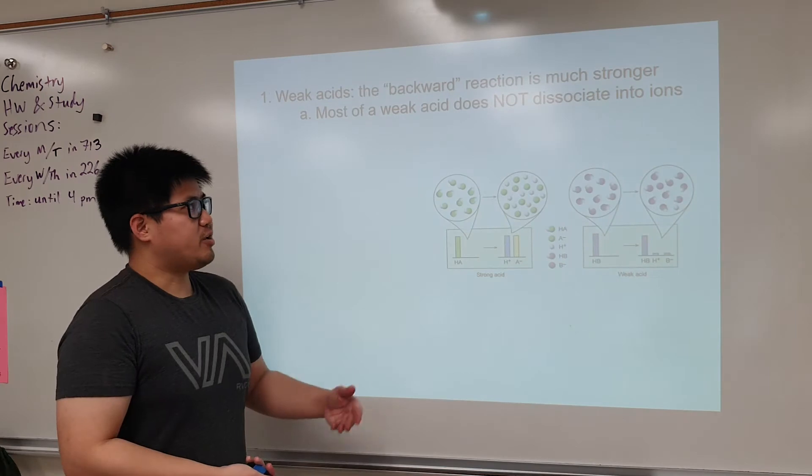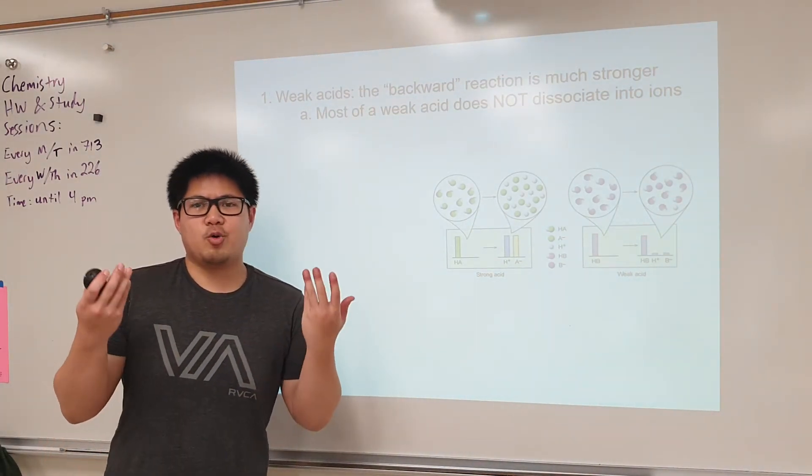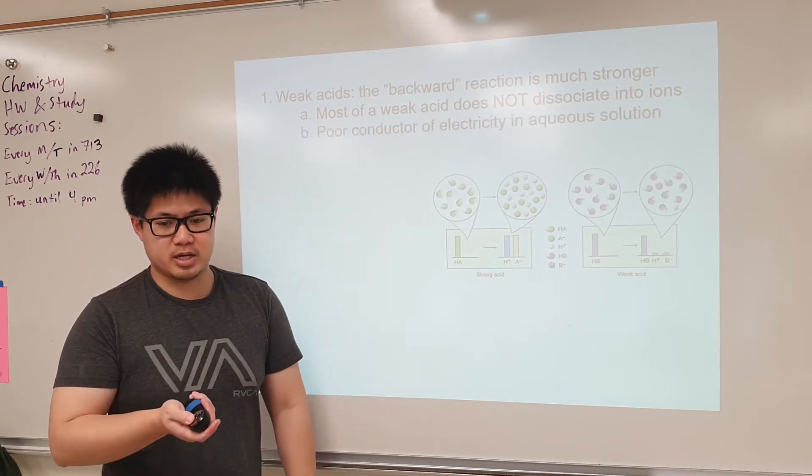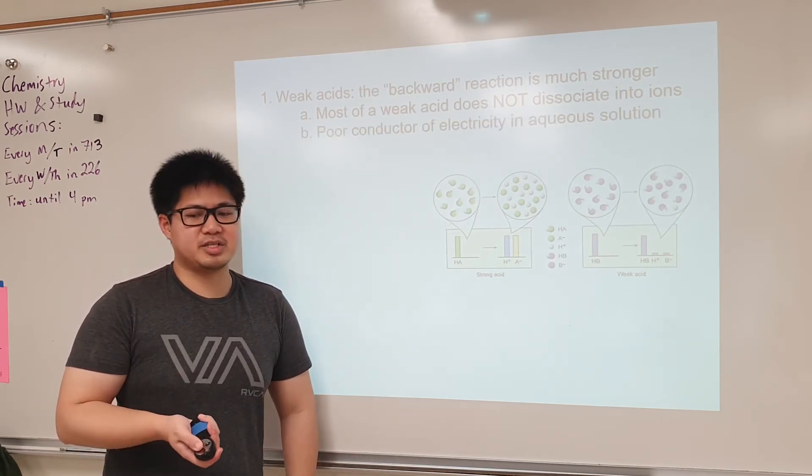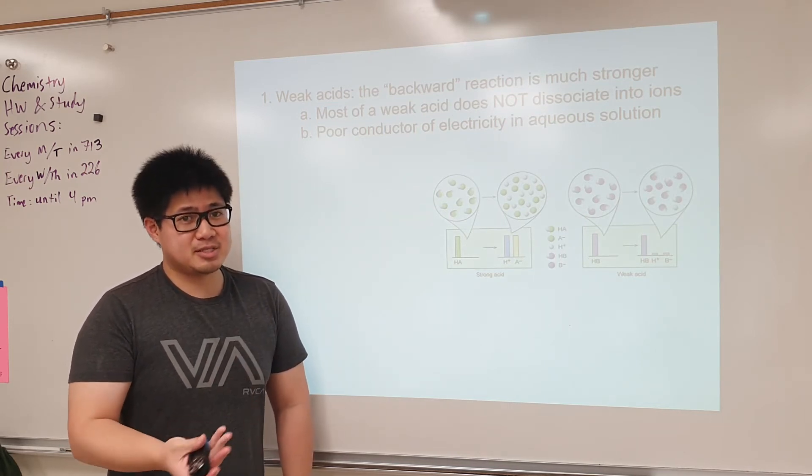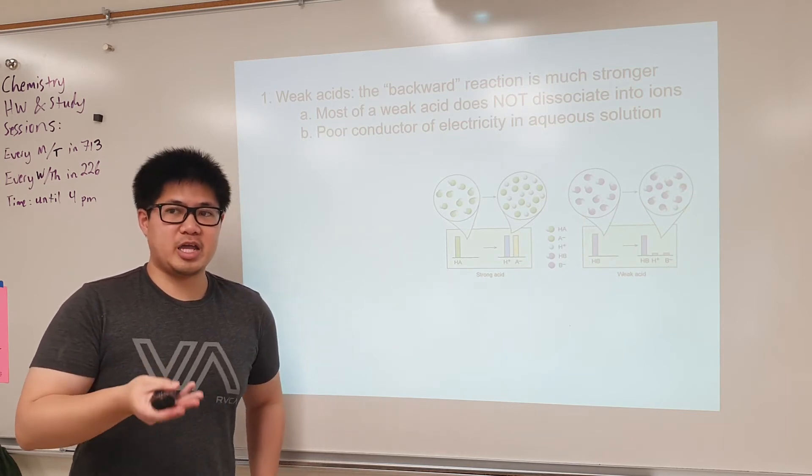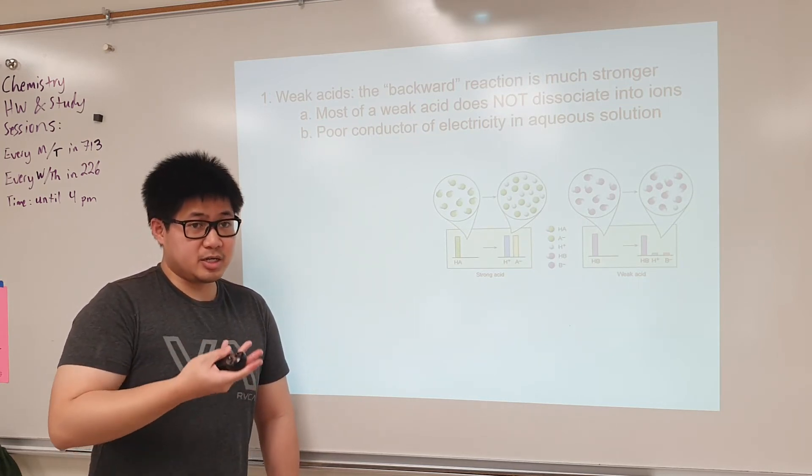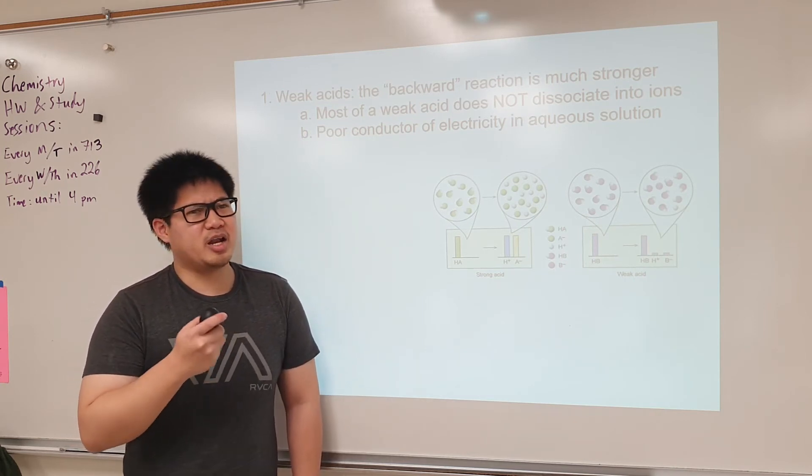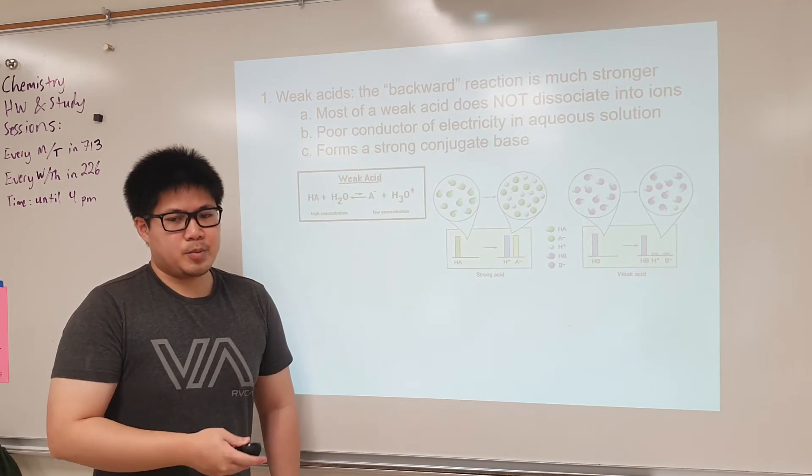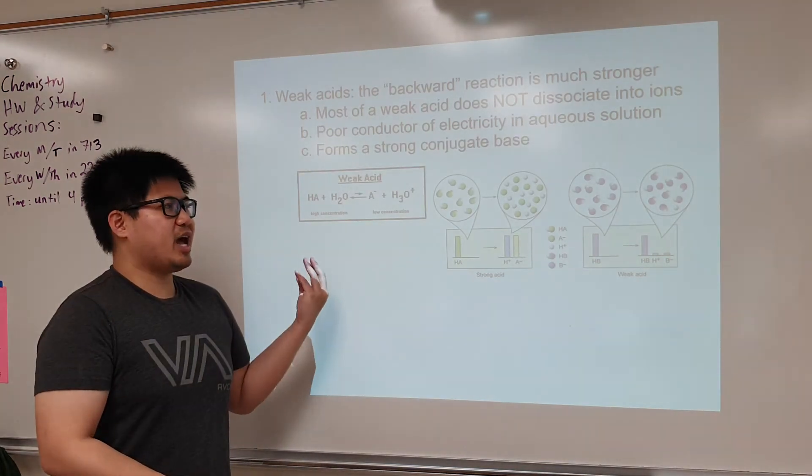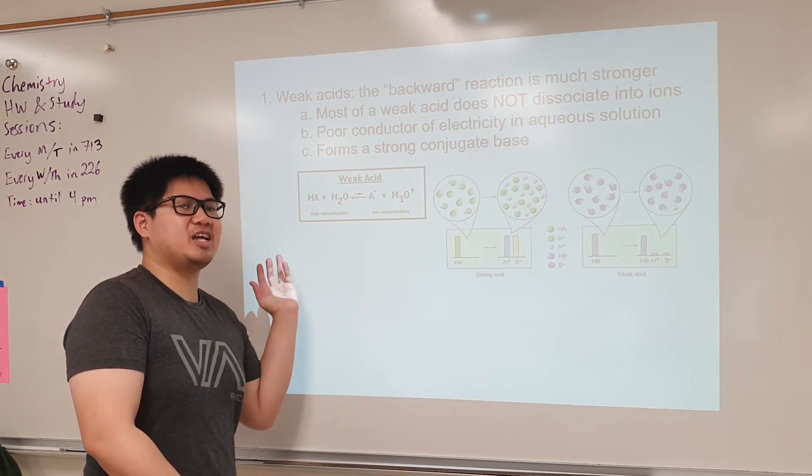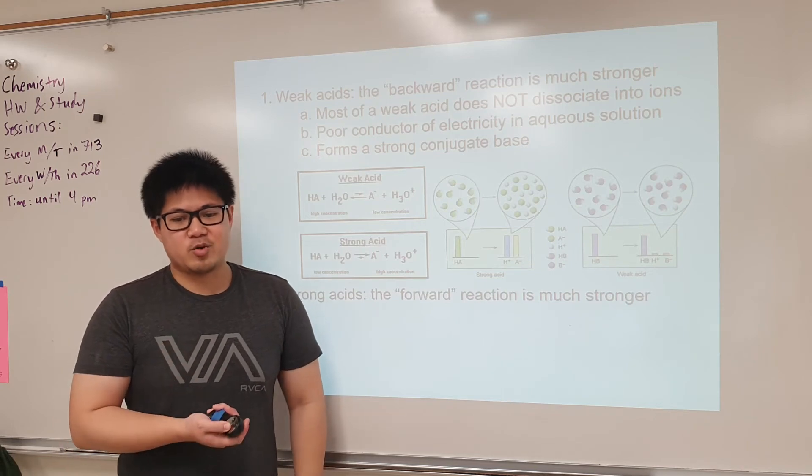In weak acids, we favor the backward reactions. A weak acid is defined as weak because that chemical compound does not completely dissociate into ions. It's a very poor conductor of electricity when put in aqueous solution. If we favor backward reactions and have a weak acid, then it must have a strong basic property.